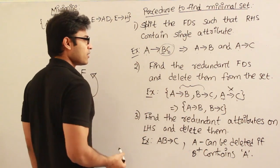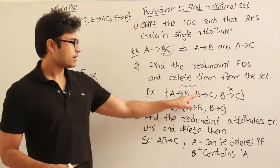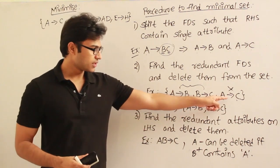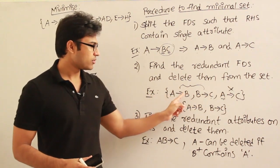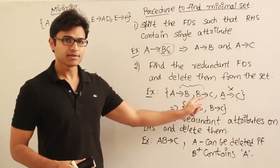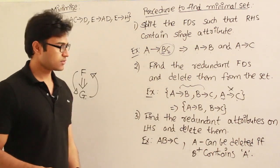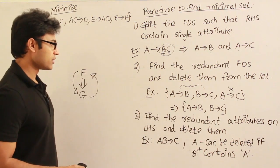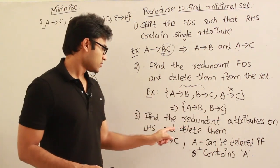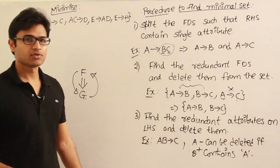Without A→C, if you find A+, you get A, B, and C. Which means without A→C, we are still able to get A+ which contains C. Therefore it is obviously redundant, and that is why you can remove it. The next step is to find redundant attributes on the LHS and delete them. You can find redundant attributes on the left hand side as well.